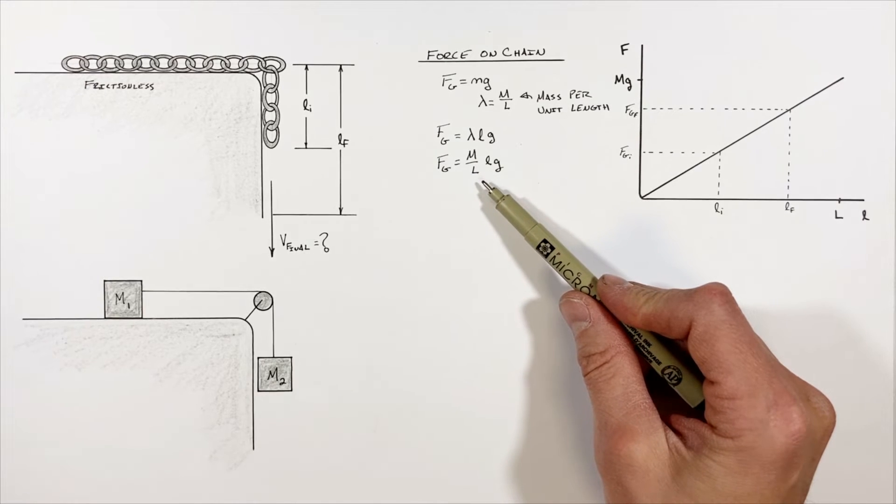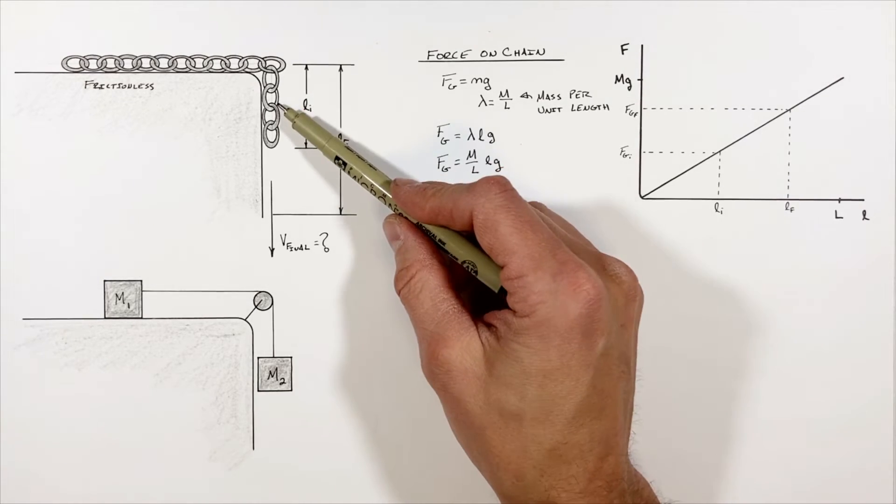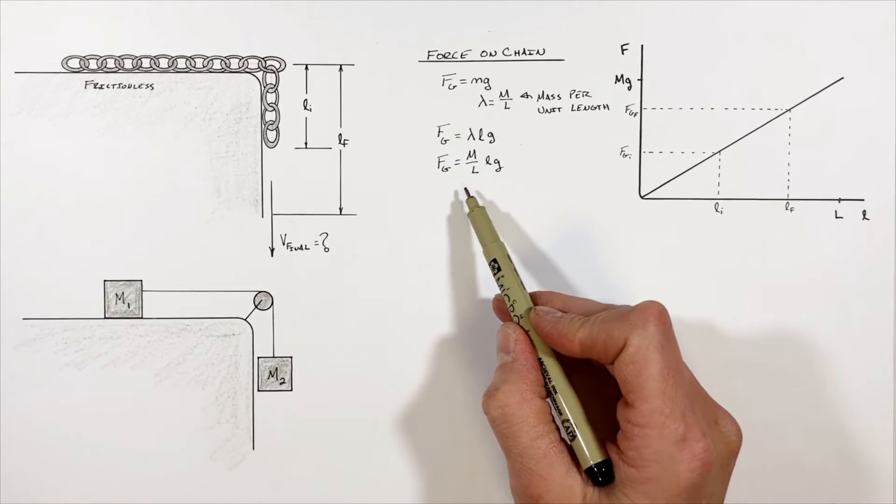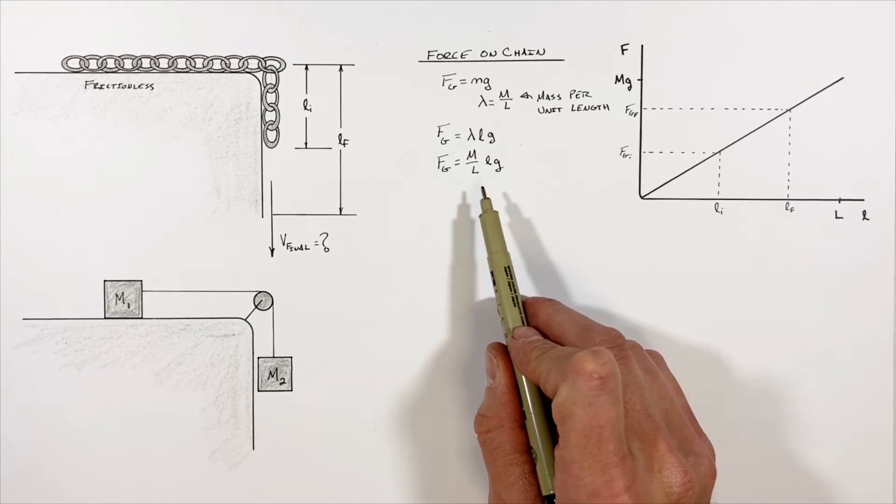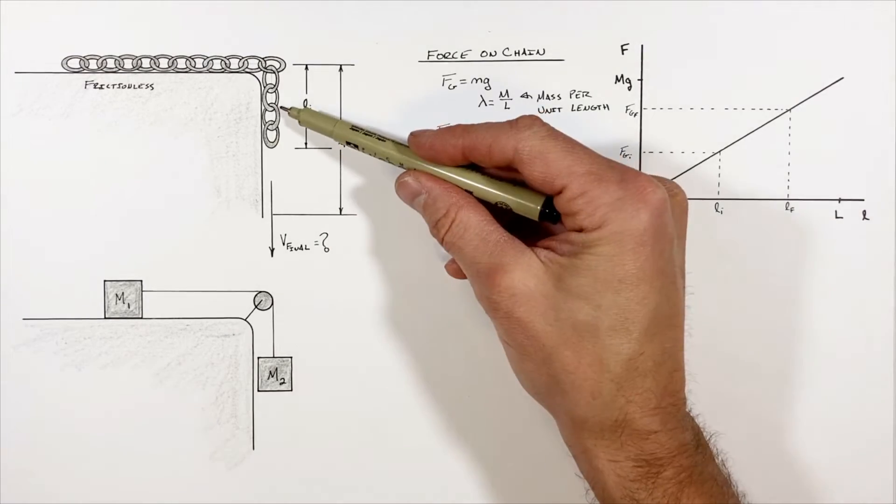And what this means is we can't just plug this into Newton's second law and use the kinematics in order to find the acceleration and in turn final velocity of the chain. So instead what we're going to do is use this function and the work-energy theorem in order to determine how much work is done by gravity as the chain moves downward.